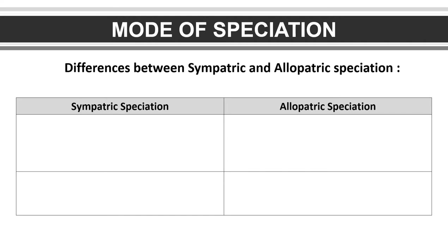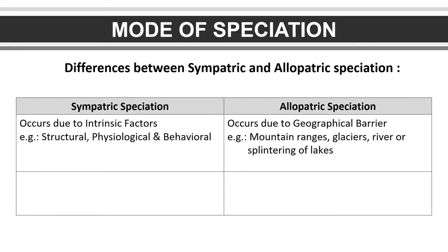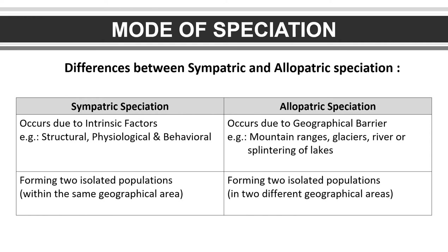These are the differences between sympatric and allopatric speciation. In sympatric speciation, it occurs due to intrinsic factors such as structural, physiological, and behavioral. In allopatric speciation, it occurs due to geographical barriers such as mountain ranges, glaciers, rivers, or lakes. In sympatric speciation, the two populations are located within the same geographical area. Whereas in allopatric speciation, the two isolated populations are located in two different geographical areas.